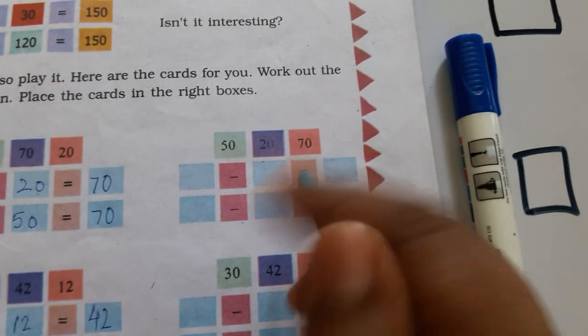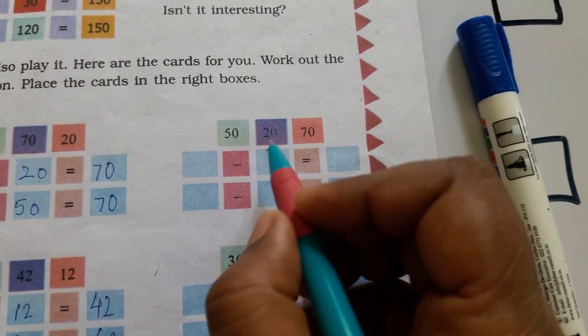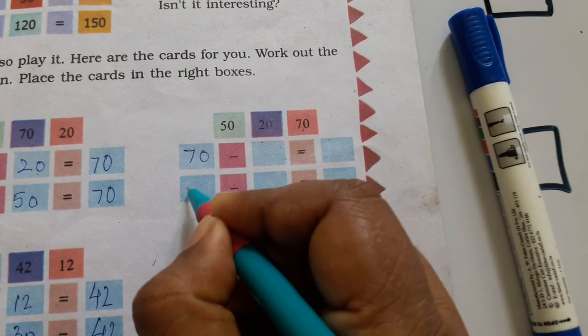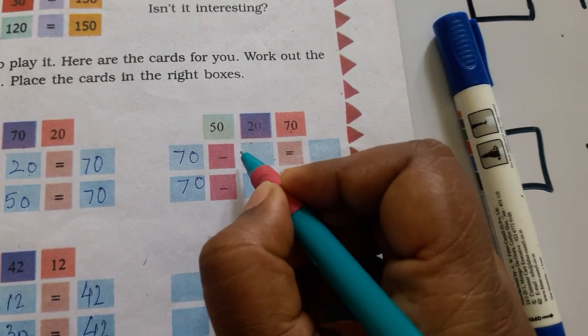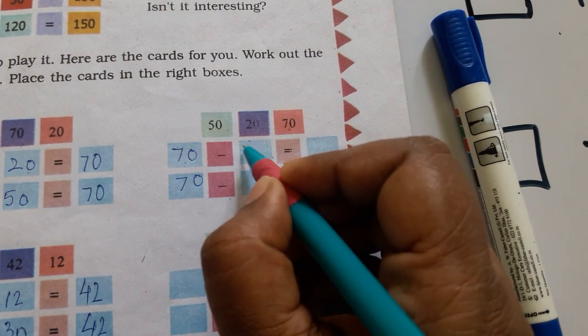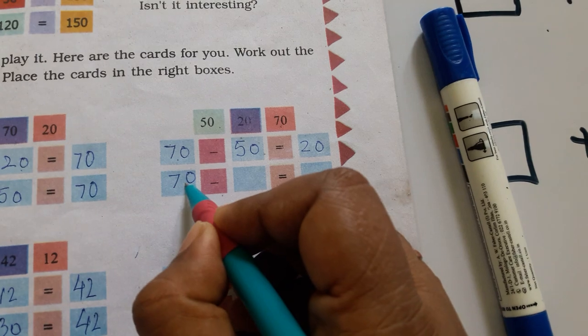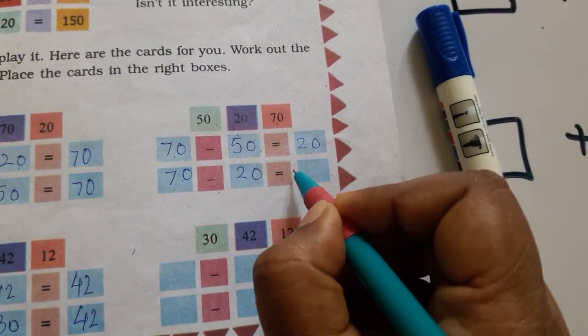And now for the subtraction ones. For subtraction ones, you can write the greatest number here in this box both ways. Now, 70 minus 50 will give you 20 and 70 minus 20 will give you 50.